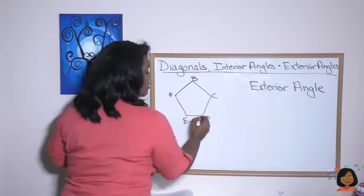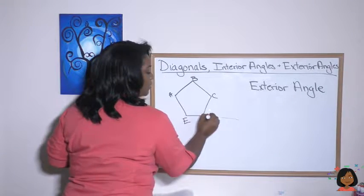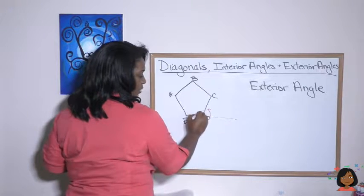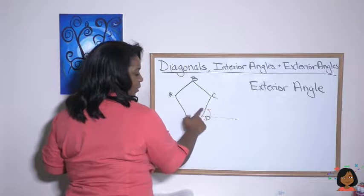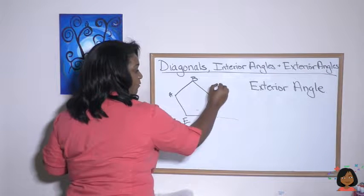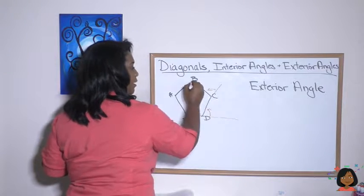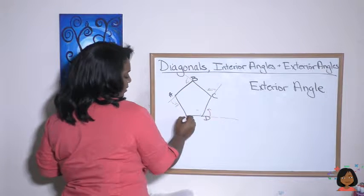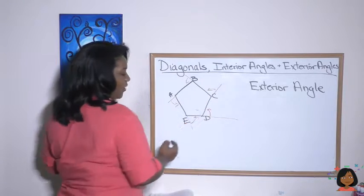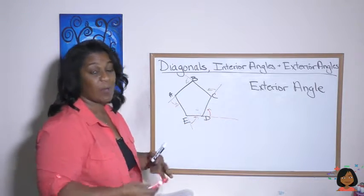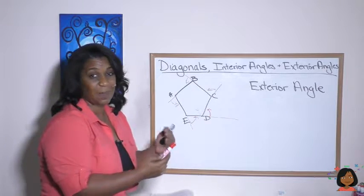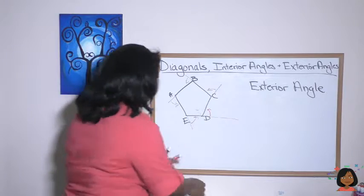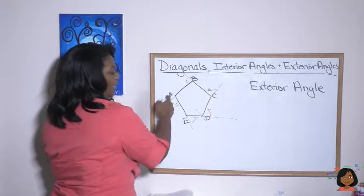What if I wanted to find the exterior angles? Exterior angles are on the outside of each interior angle — there's one at every vertex. How do we find those? It turns out we can still use diagonals and interior angles to help us. Let me use blue — from point A I can draw two diagonals.